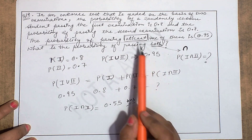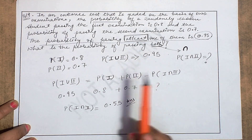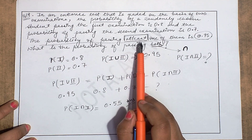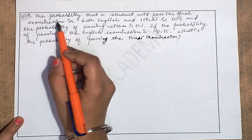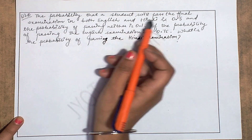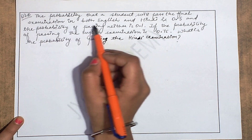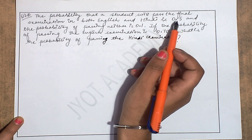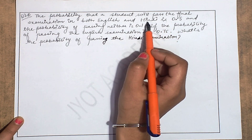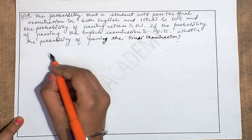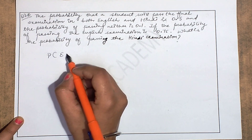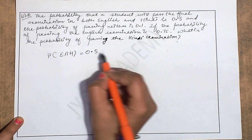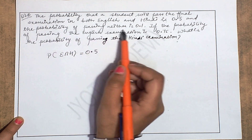The twist here was that the word 'at least' was used instead of 'union' directly, but it means union. Now the next problem: the probability that a student will pass the final examination in both English and Hindi is 0.5. So P(E ∩ H) = 0.5.